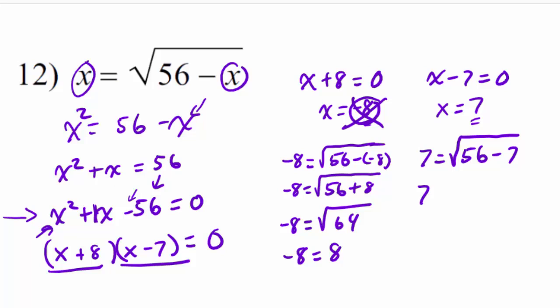Substituting 7: 56 minus 7 gives 49, and the square root of 49 is 7. Seven equals 7 — that works out. So the only solution is 7, not negative 8 and 7.